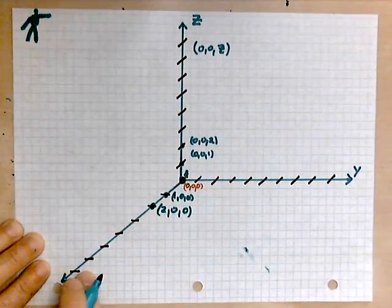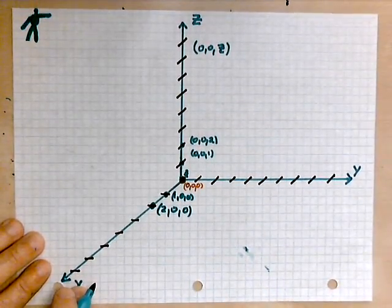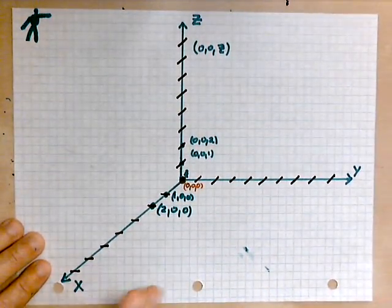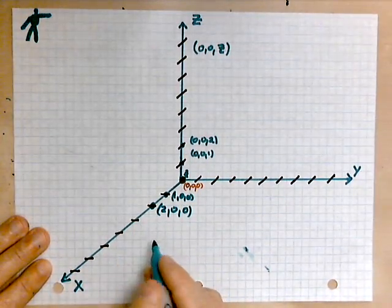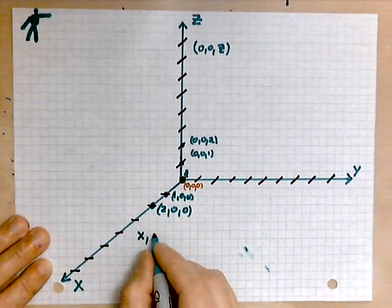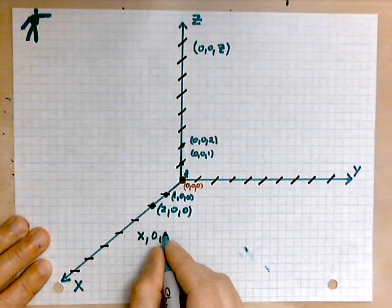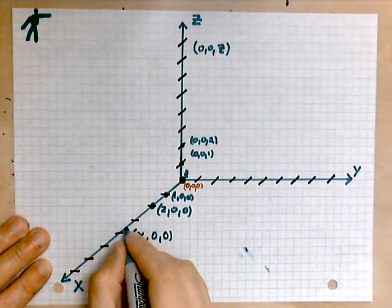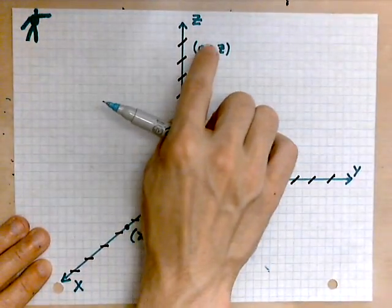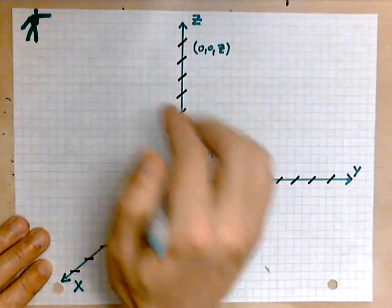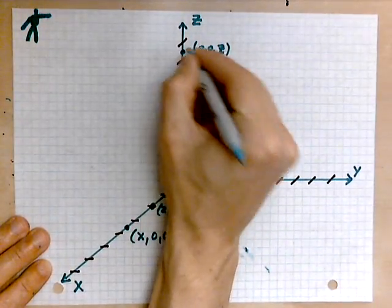And a general point on the x-axis in this right-handed coordinate system could be described as x, 0, 0. A random point on the x-axis is described this way, just as here a random point on the z-axis is described this way.